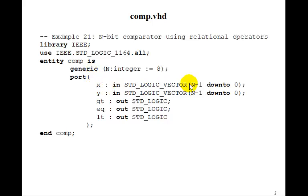And then x will be an n minus 1 down to 0 input. Y is standard logic vector n minus 1 down to 0. And then greater than, equal and less than are the three outputs.